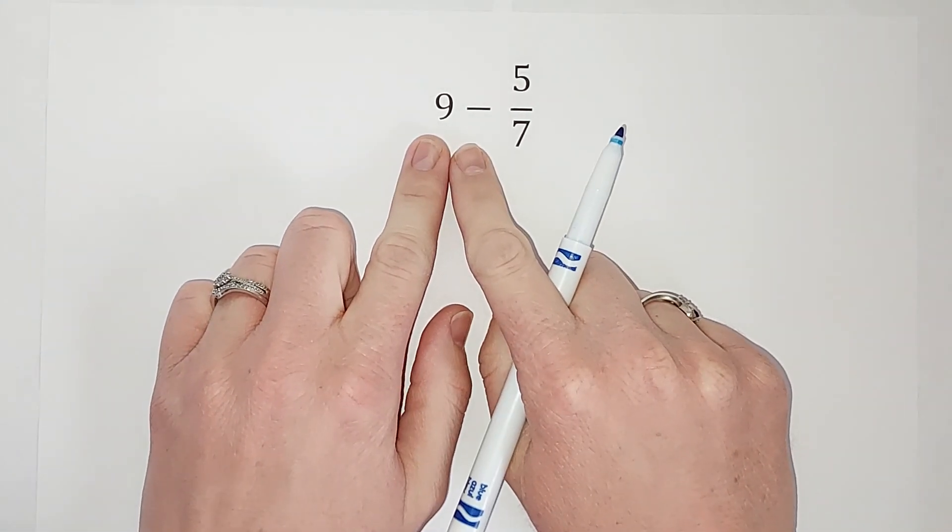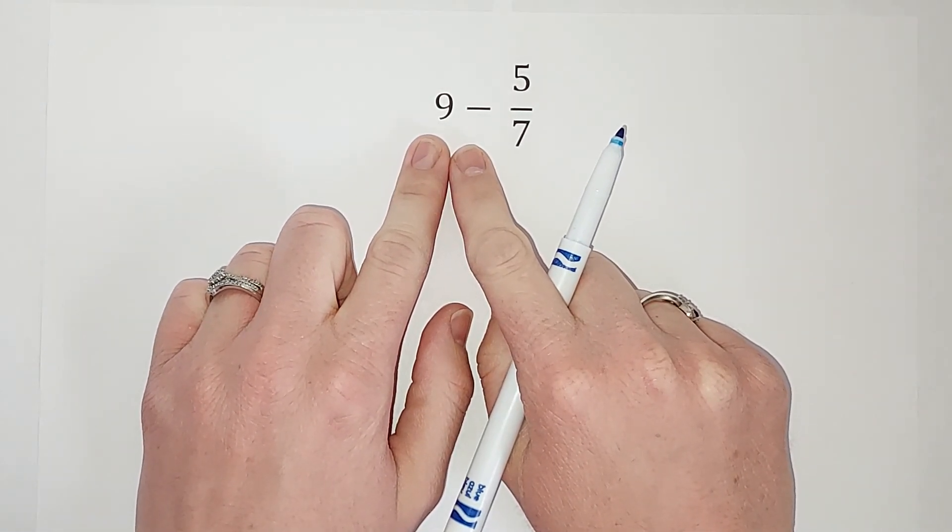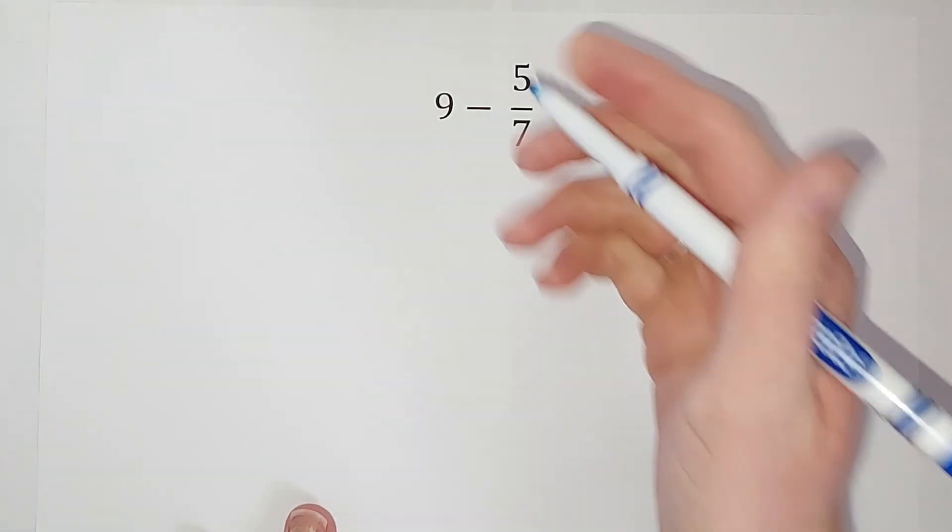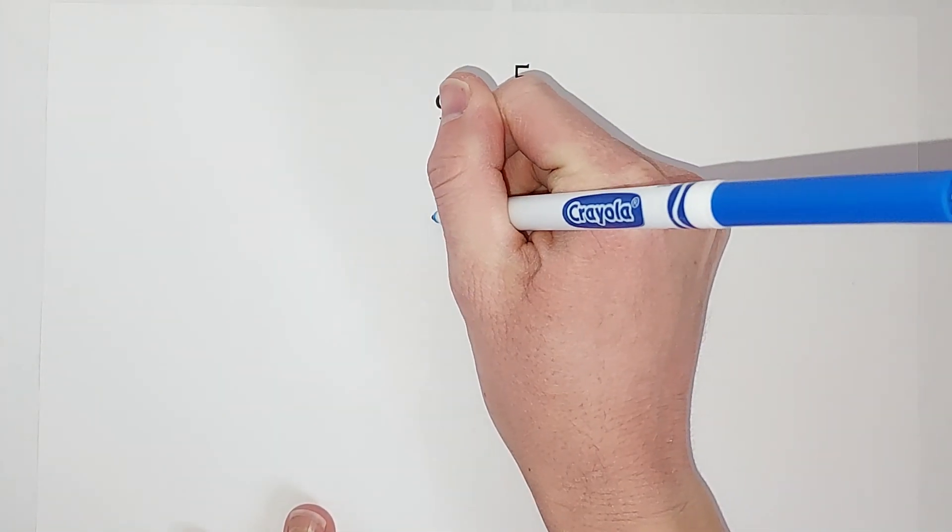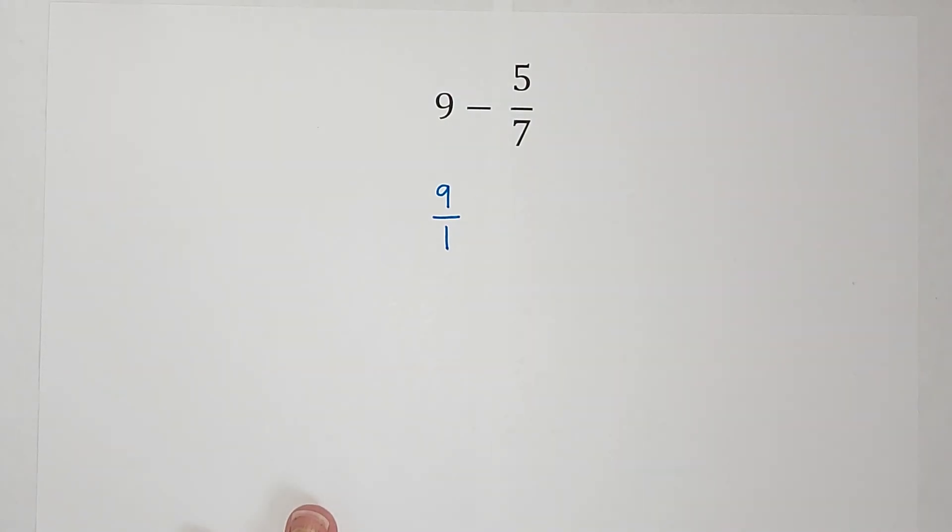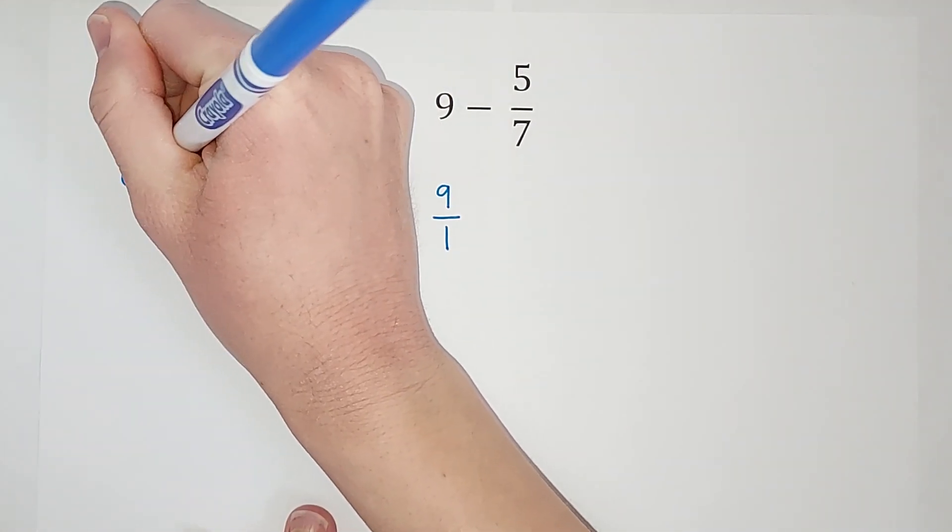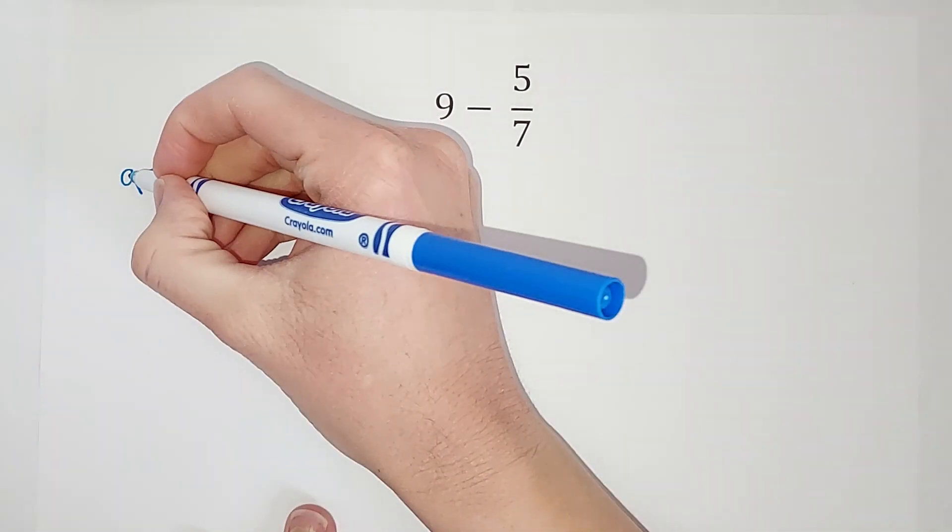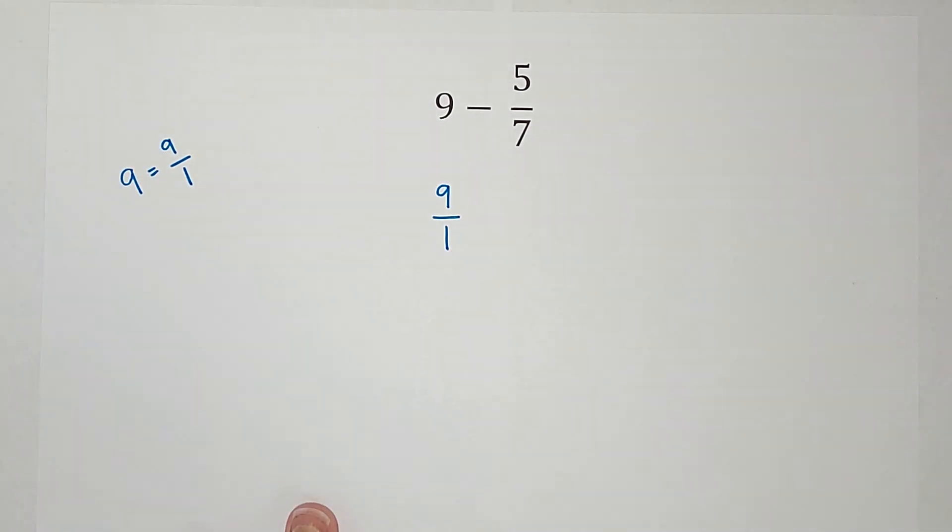If you ever see a number that doesn't look like a fraction, you can turn it into a fraction by just putting it over a 1. 9 and 9 over 1 are the same thing. This writing as a 9 is just more simplified and how we're used to seeing it, but they mean the same thing.